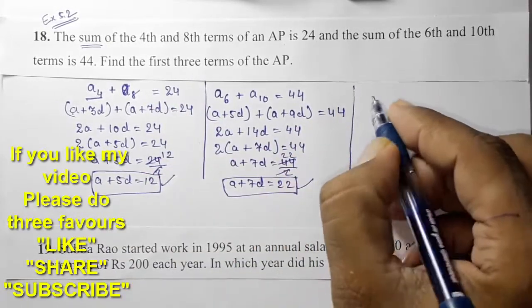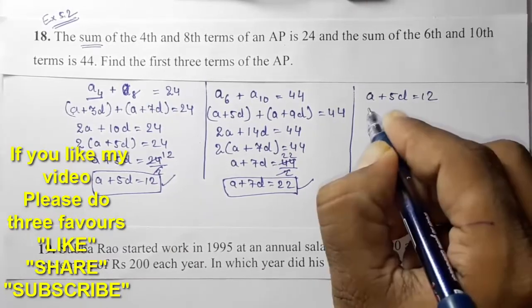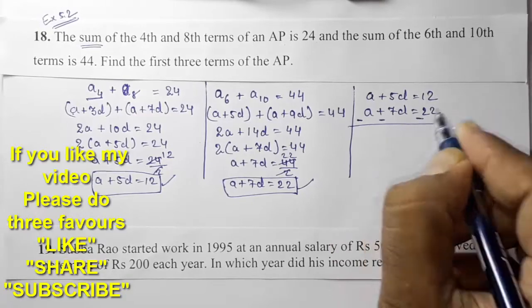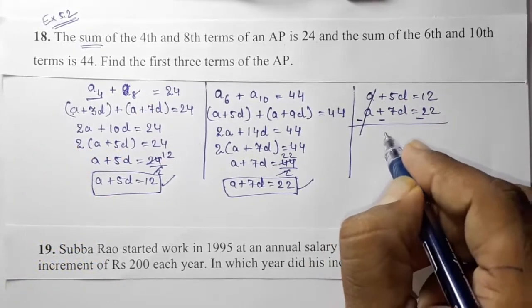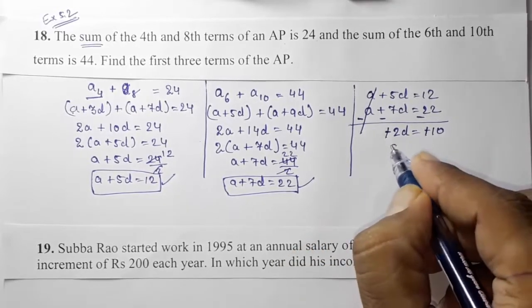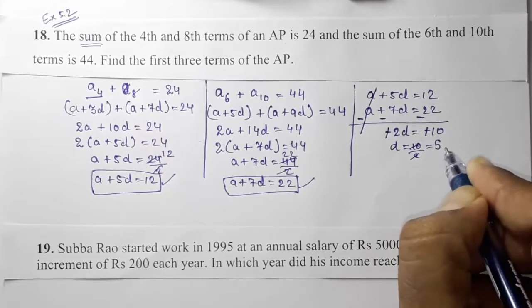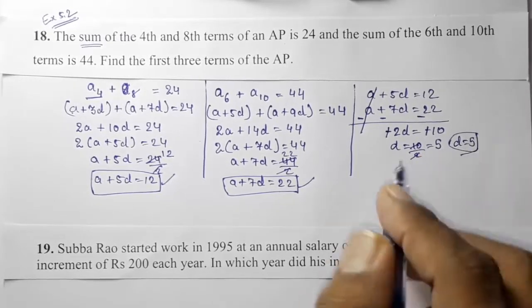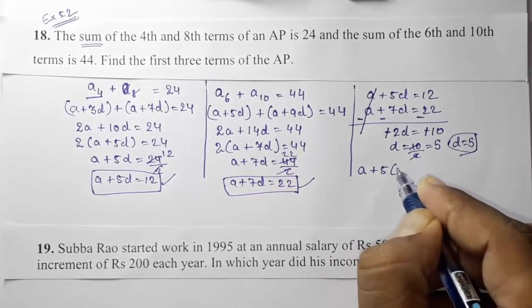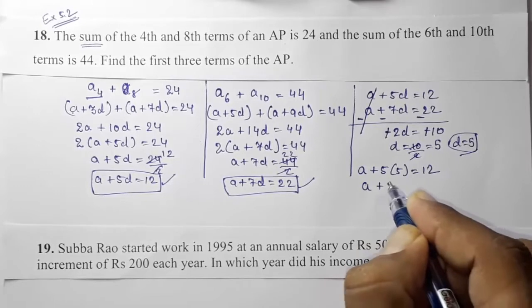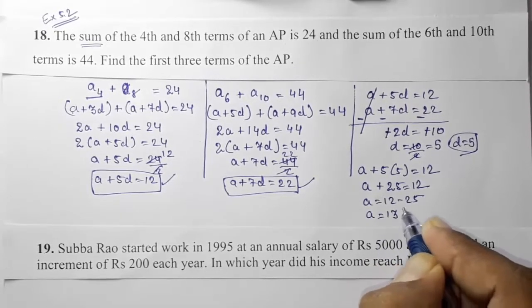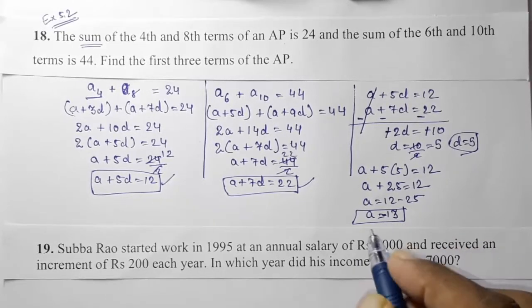From these two equations we can find a and d by elimination. Equation 1: a + 5d = 12. Equation 2: a + 7d = 22. Subtracting equation 1 from equation 2: the a terms cancel, and 7d − 5d = 2d, and 22 − 12 = 10, so 2d = 10, giving d = 5. Substituting d = 5 into equation 1: a + 5×5 = 12, so a + 25 = 12, so a = 12 − 25 = −13.